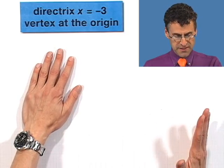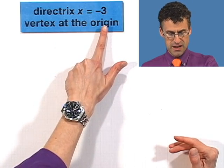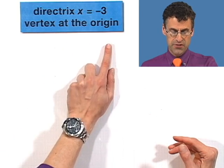Suppose that we're told that someone's thinking of a parabola, and all that they tell us is that the directrix is x equals negative 3, so that's a line, and the vertex is at the origin.